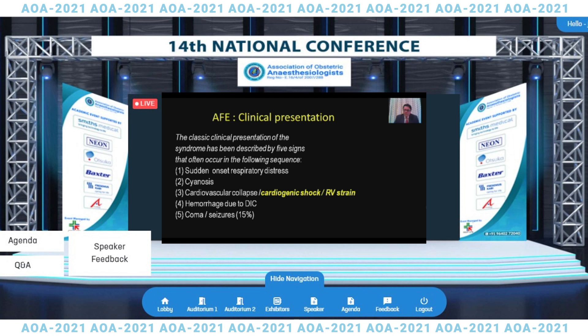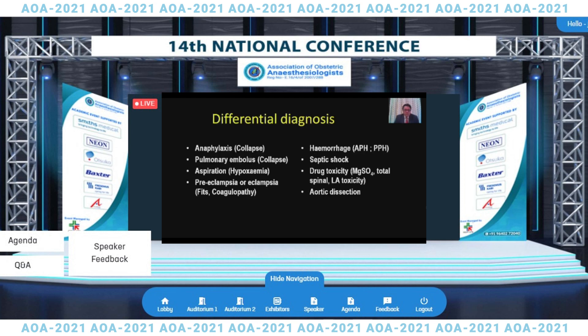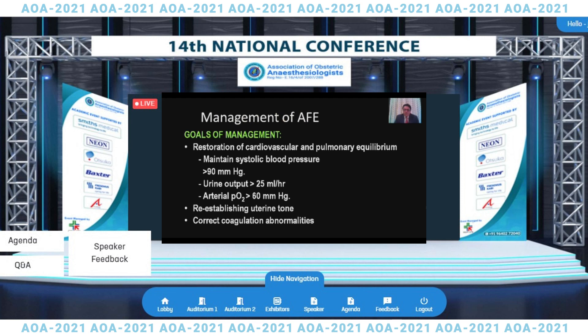Clinical presentation is very variable depending on how many systems are involved. The initial symptoms are usually respiratory distress followed by a shock state and multi-system affection. A lot of investigations will be needed—from complete blood count to echocardiography—to rule out many conditions before reaching the conclusion of amniotic fluid embolism. There is a huge differential diagnosis including anaphylaxis and aortic dissection. We need to rule out all these conditions before labeling this as amniotic fluid embolism, as AFE has no specific treatment and we can only support the multi-system morbidity.